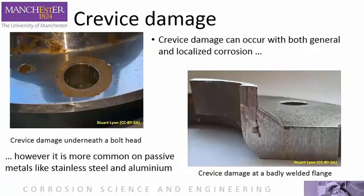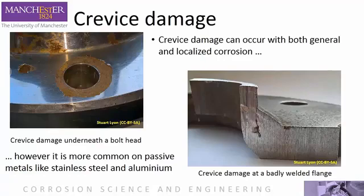Another example of localized corrosion occurs where the availability of oxygen is restricted, for example in the crevice between two mating surfaces. This form of corrosion is more common on passive metals like stainless steel and aluminium, although it can occur on any surface. Both examples here show crevice corrosion of stainless steel — in one case underneath a bolt head and in the second on a badly made weld between a flange and a pipe.